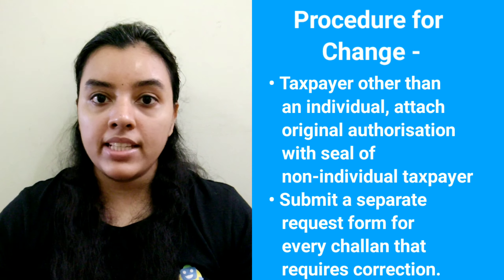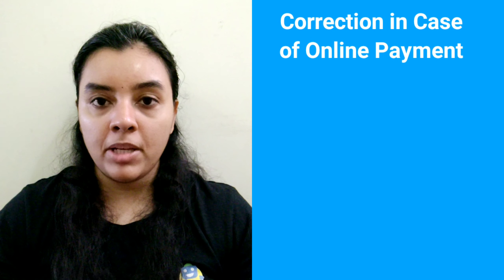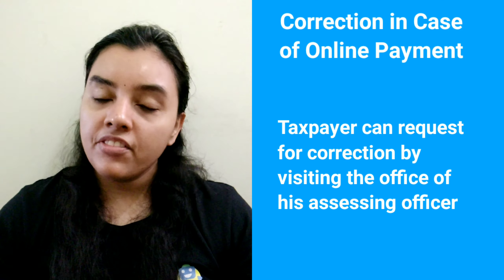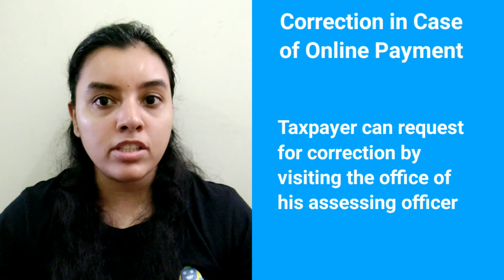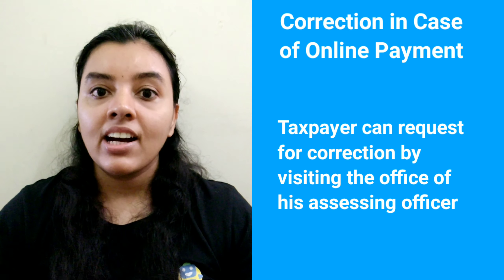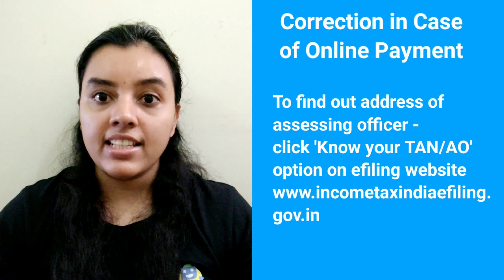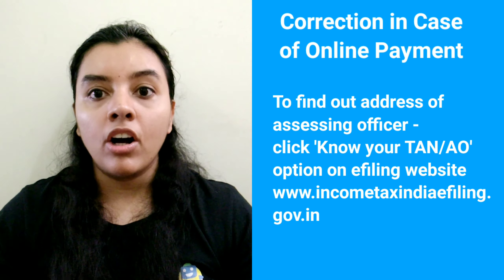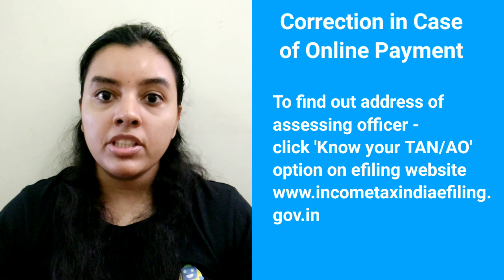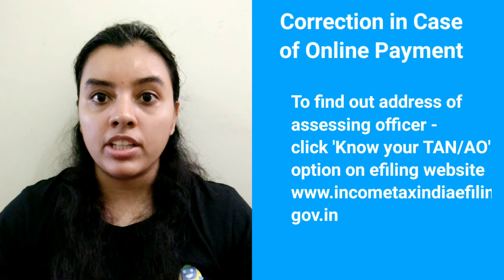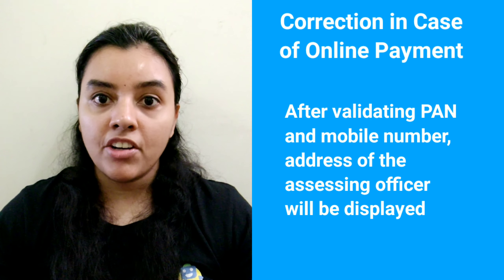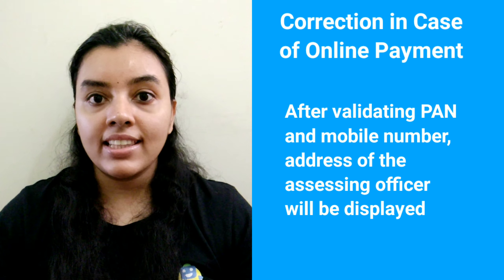For every challan that requires correction, a separate request form needs to be submitted. In cases of online payments, or where the window of 7 days to correct the challan through the bank has passed, or if any other head needs to be changed other than those mentioned above, then the taxpayer can still make a request for correction by visiting the office of his assessing officer. To find the address of the assessing officer, click on the 'Know Your TAN or AO' option on the left side of the official tax filing website, i.e. www.incometaxindiaefiling.gov.in. After validating the PAN and mobile number, the address of the assessing officer will be displayed.